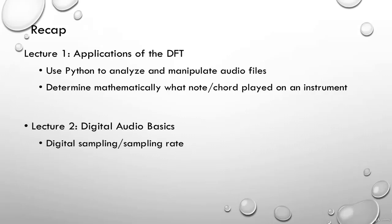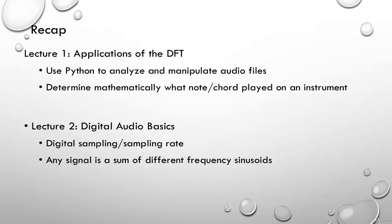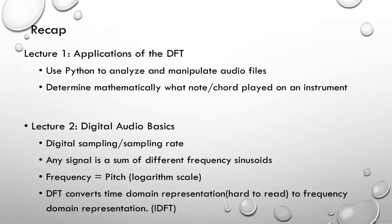In lecture 2, we talked about digital audio basics, digital sampling and sampling rate, and how any signal is simply a sum of different frequency sinusoids — including music, voice, or any audio signal. We discussed that the way we perceive frequency (the pitch) is based on a log scale. The discrete Fourier transform converts samples in the time domain to the frequency domain representation, where information is much easier to read. The inverse discrete Fourier transform converts it back, so the transform is invertible.